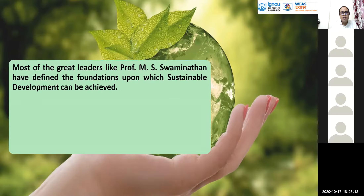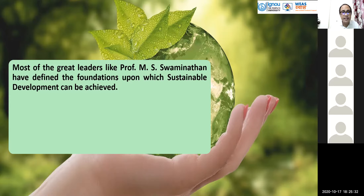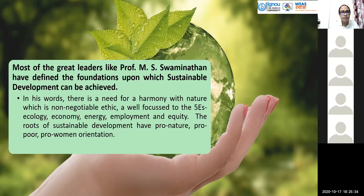Professor M.S. Swaminathan, the Father of Green Revolution in India and developer of sustainable science in India, defined the foundation upon which sustainable development can be achieved. In his work, there is a need for harmony with nature, which is non-negotiable. He focuses on the five E's: Ecology, Economy, Energy, Employment, and Equity. Because of development, we are creating a product called inequity — an unequal world. The roots of sustainable development should be pro-nature, pro-poor, and pro-woman in orientation.